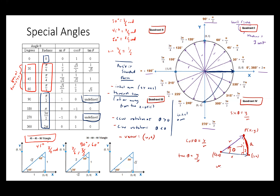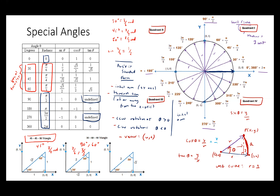Because this is a unit circle, the radius r is 1. So cosine theta equals x/1, which is just x. Sine theta equals y/1, which is just y. And tan theta is y/x, which equals sine theta over cosine theta. That's where the quotient identity can be derived from the unit circle — a very useful proof.